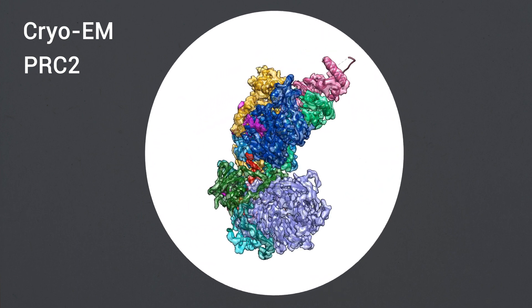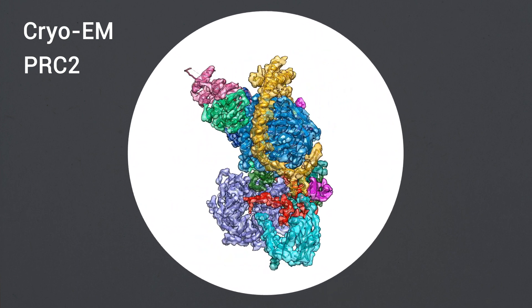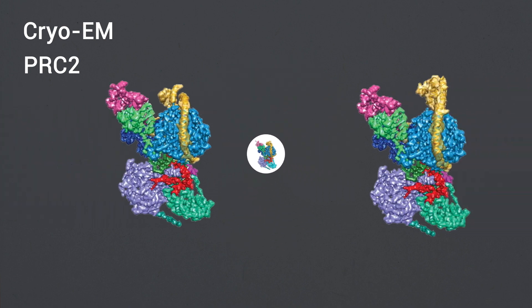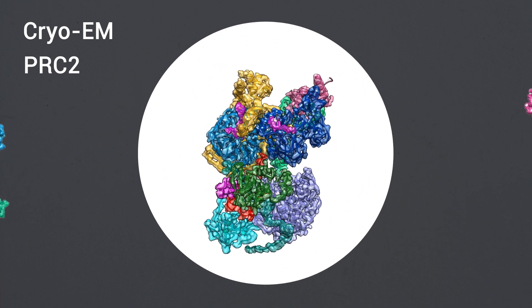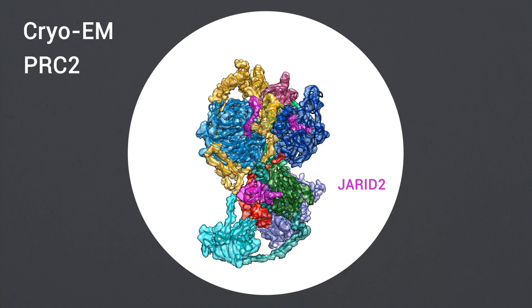we report cryo-electron microscopy structures of human PRC2 in a basal state and in two distinct active states, while in complex with its cofactors JARID2 and AEBP2.